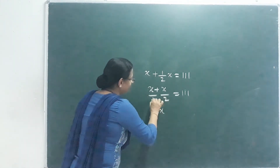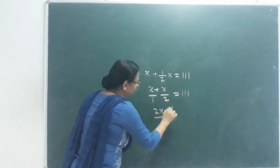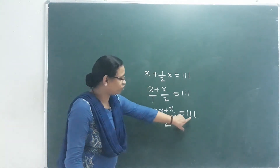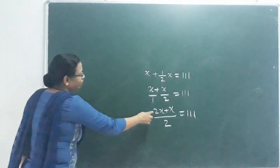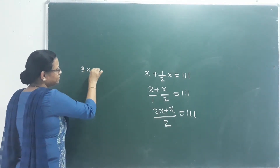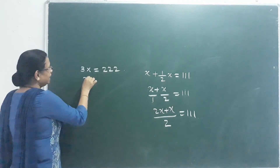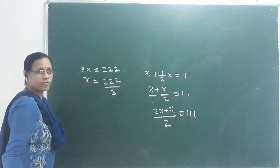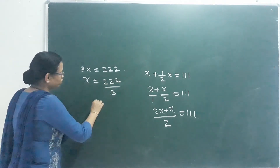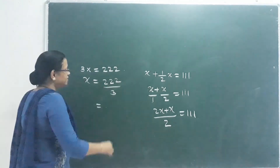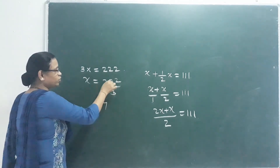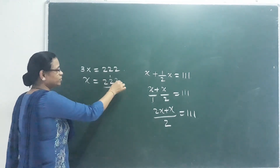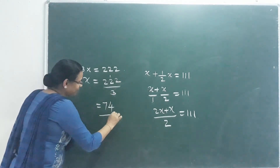We get 2x plus x by 2 equals 111. Cross multiplying gives 3x equals 222. So x equals 222 by 3. Doing the division: 7 times 3 is 21, carrying over, we get x equals 74.